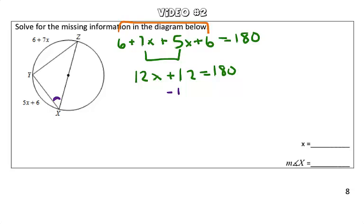To solve, we're going to use inverse operations, subtract 12 from both sides, so we get 12x is equal to 168. To solve for x, we're going to divide 12 from both sides. x is equal to 14.